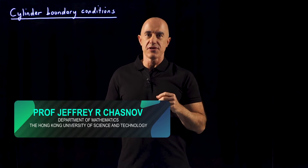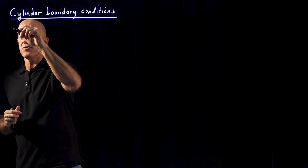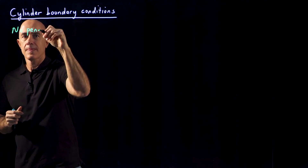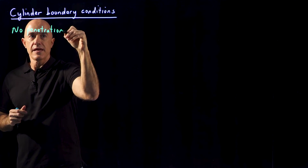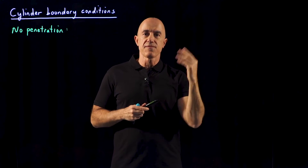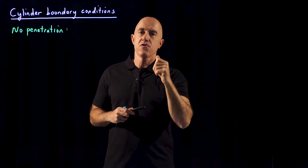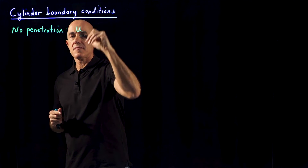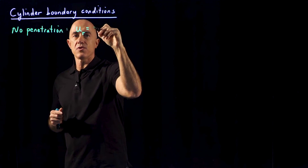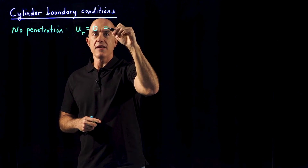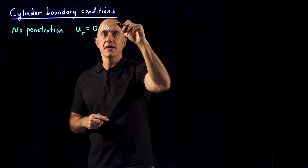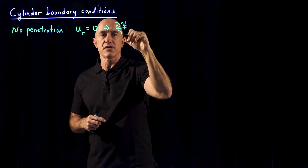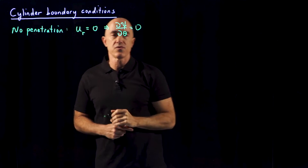Now we need to consider the boundary conditions on the cylinder. There are two physical principles that we need to use. The first is called no penetration. The no penetration principle means that the fluid cannot flow into or out of the cylinder. That means the radial velocity of the fluid has to be zero, which translates into the partial derivative of the stream function with respect to theta having to equal zero.